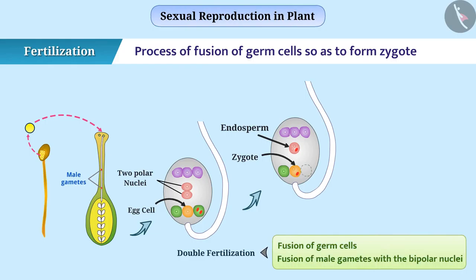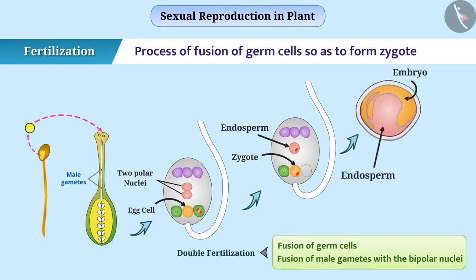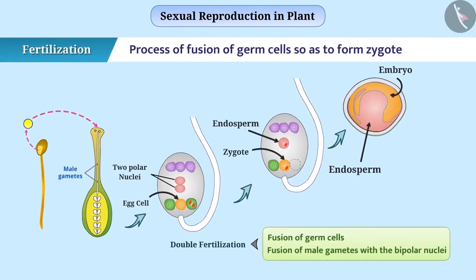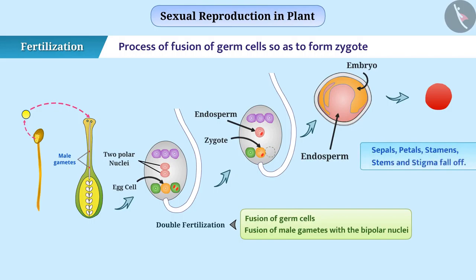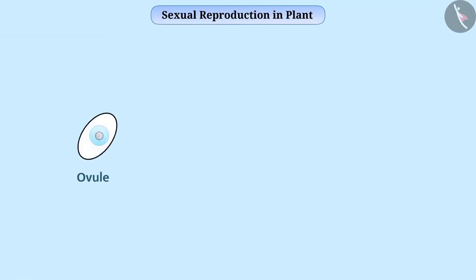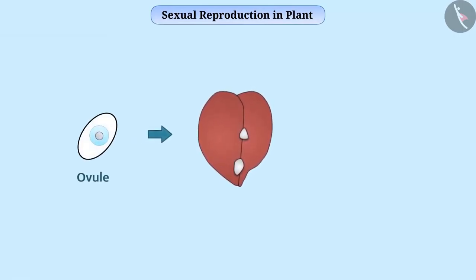After fertilization, the zygote divides several times in the ovule, causing its transformation into the embryo. Endosperm provides nutrition to the embryo. At the same time, the ovary changes into fruit. During this activity, other parts of the flower — like sepals, petals, stamens, and stigma — fall off. The ovule undergoes transition into a hard covering called a seed.